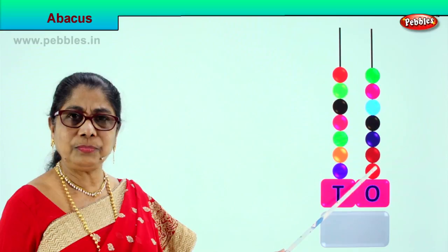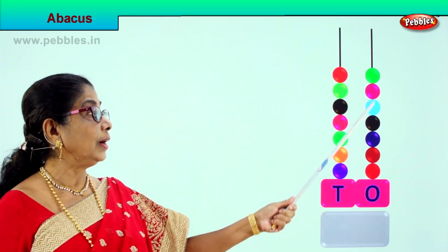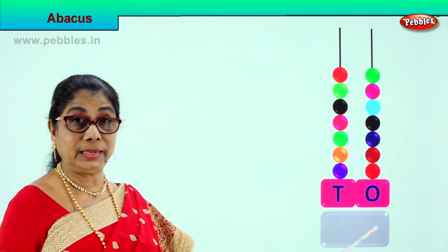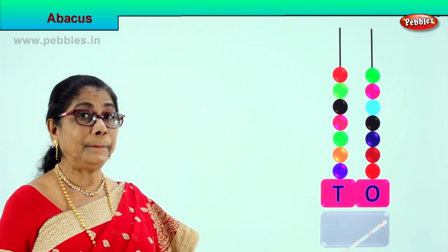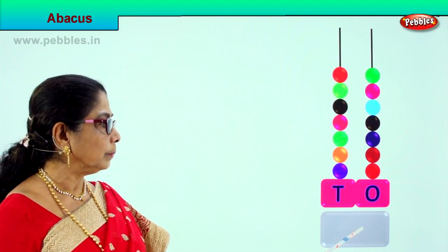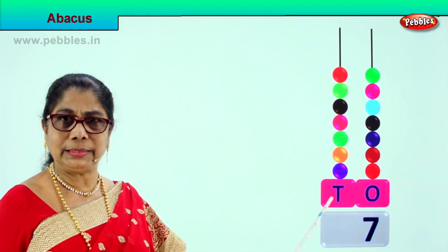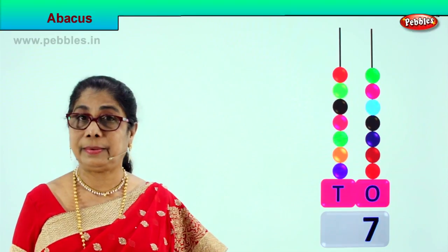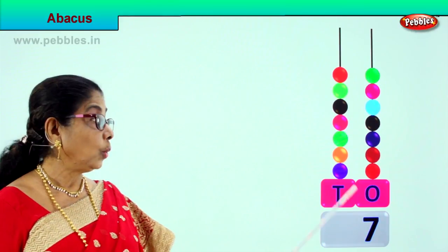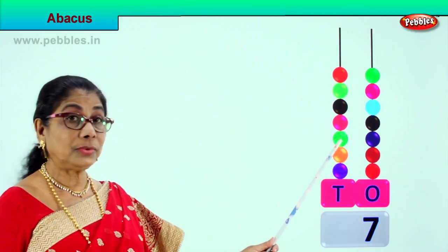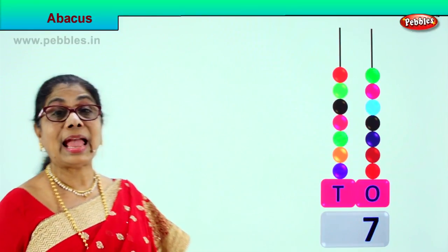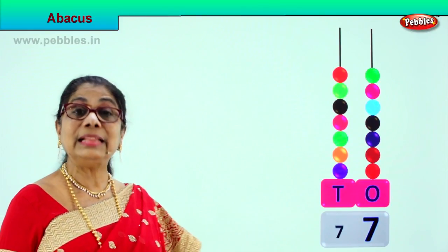In the ones place we have 1, 2, 3, 4, 5, 6, 7 — that is 7 ones. We write 7. Next we go to the tens place — every bead is ten. We count: 1 ten, 2 tens, 3 tens, 4 tens, 5 tens, 6 tens, 7 tens. There are 7 beads, so we write 7 here. That is 7 tens — seventy. Seventy and 7 ones is seventy-seven.